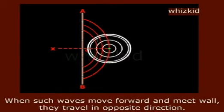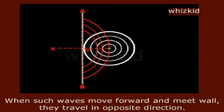When such waves move forward and meet the wall, they travel in the opposite direction. The distance of incident wave from center to the wall will be equal to the distance from the center of a reflected wave to the wall.